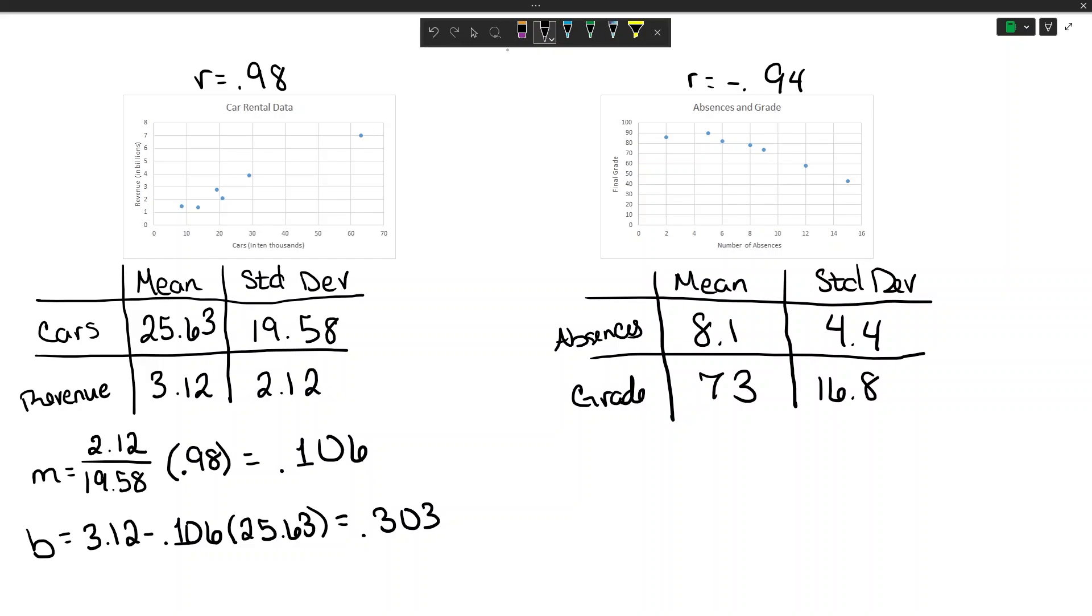So this tells me that my line is 0.106 times x plus 0.303.